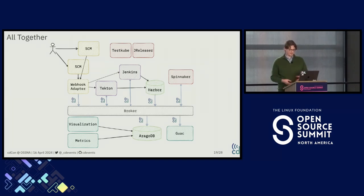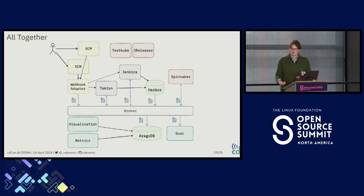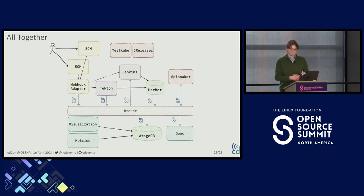In our proof of concept, we collect all the events sent to a broker into something like an ArangoDB or some kind of graph database. You can use that information to build visualization — we did some POC using Grafana, and there are other tools you can use as well. We also use the software supply chain part for collecting events from GUAC or from other tools like Ortelius when supported in the future.